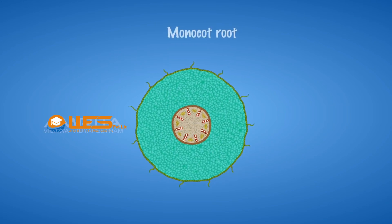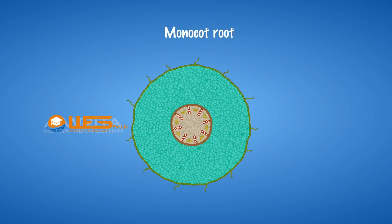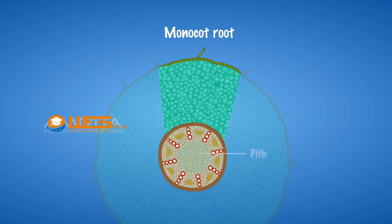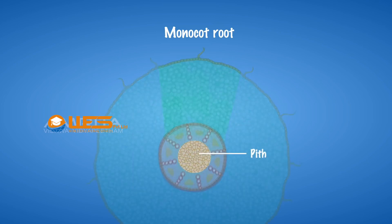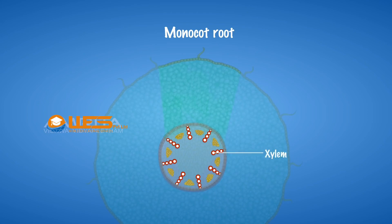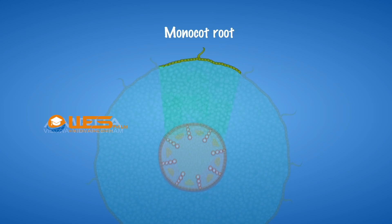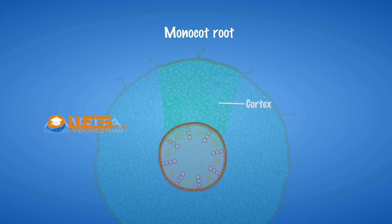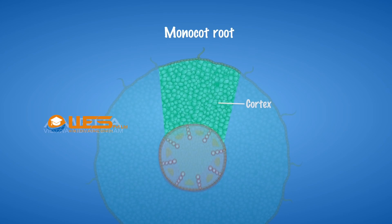Monocot root: Monocot roots vary from dicot roots in some ways. The central portion of the monocot root is occupied by a well-developed pith made up of parenchyma cells. The vascular bundle consists of eight or more alternate bundles of xylem and phloem, called radial bundles. A typical monocot root has an epidermis forming the outermost covering. A single layer of barrel-shaped cells makes up the endodermis, separating the cortex from the vascular tissues. The monocot root also has a large cortex made up of many layers of parenchyma cells.